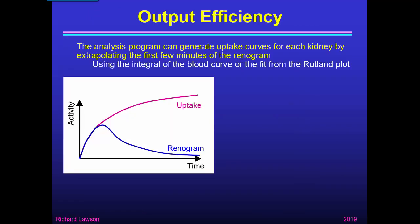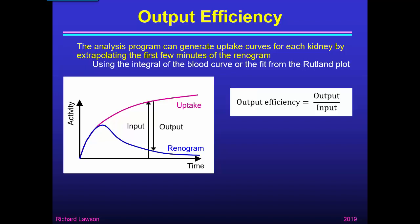Now to quantify elimination. We can measure something called output efficiency. The analysis program can generate the uptake curves for each kidney by extrapolating the first few minutes of the renogram — this is sometimes called the zero output curve, because it represents what's come into the kidney if nothing were to come out. It can do that using either the integral of the blood curve or the fit from the Rutland plot. We can then measure the output efficiency as what came out divided by what went in — at any time point.